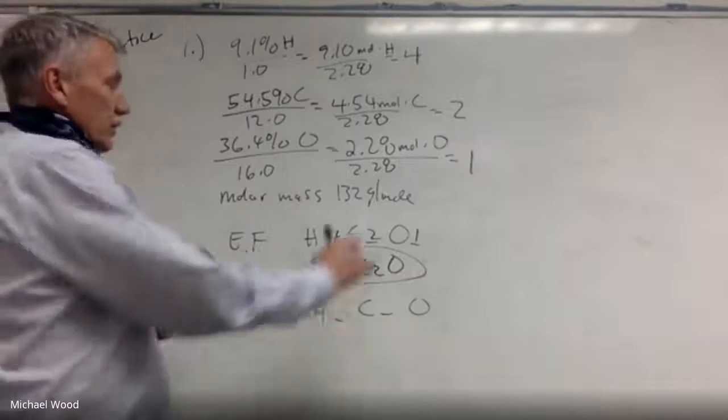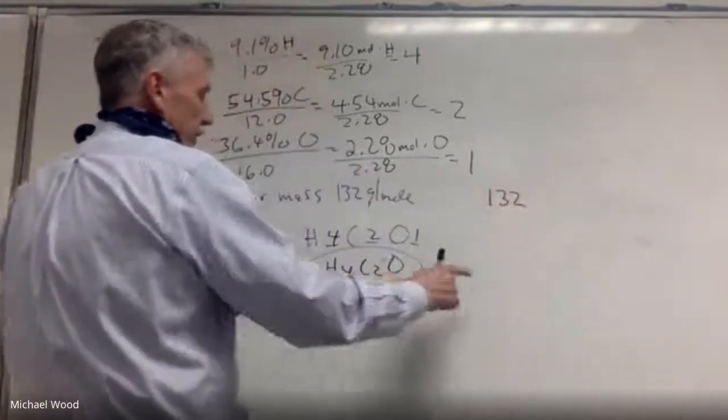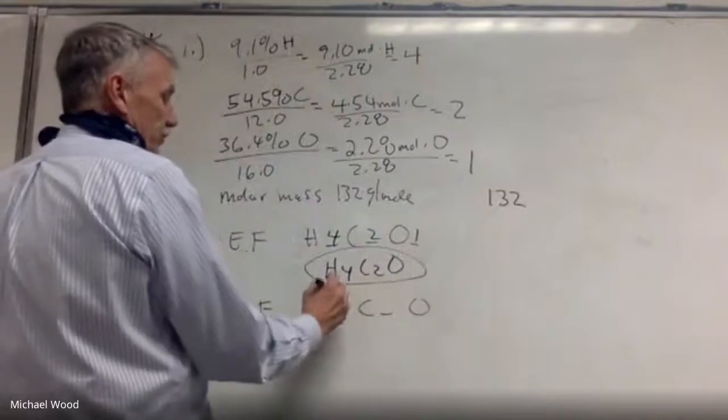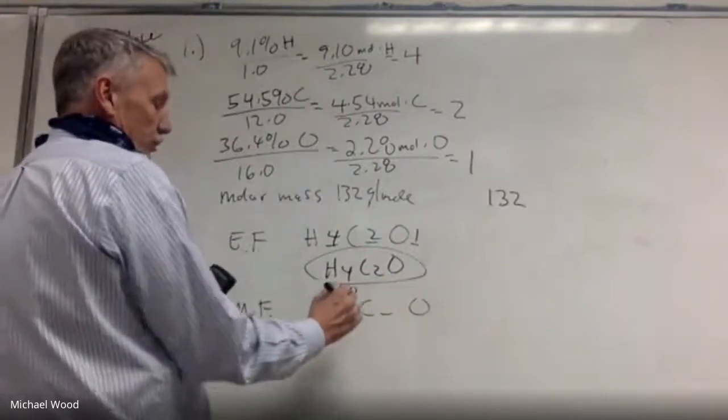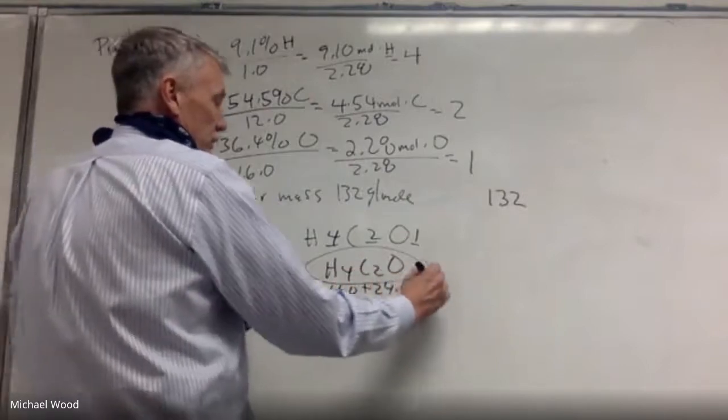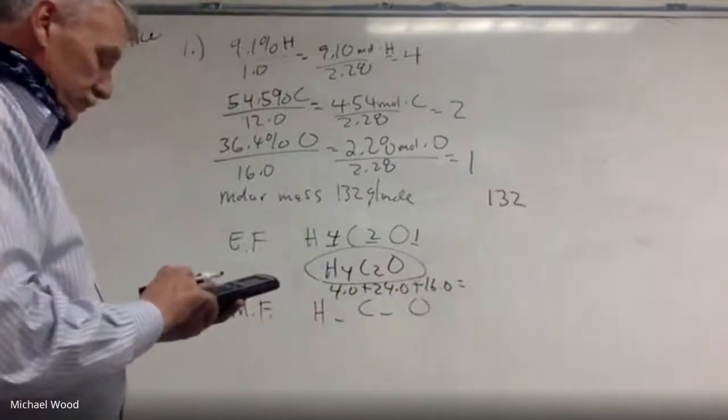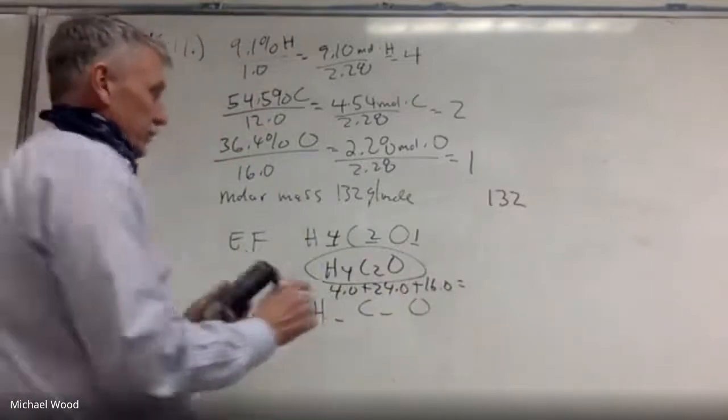Okay, now the molecular formula, I take the mass that's given here, 132, and I find the mass of this. So for this, four hydrogens would be 4. Hydrogen 12 times 2 is 24. And oxygen is 16. So that is 44.